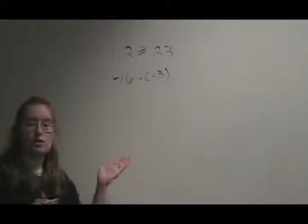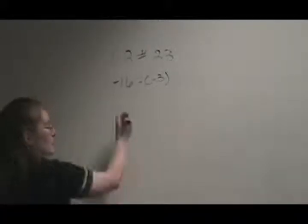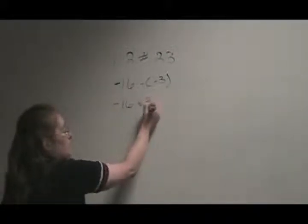So in this case, whenever you see two negative signs back to back, you actually just change it to a positive. They cancel each other out. So we have negative 16 plus 3.